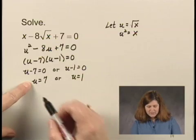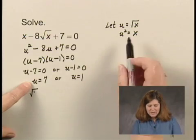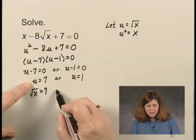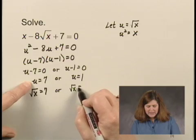If u is 7, then the square root of x has to be 7. If u is 1, then the square root of x has to be 1.